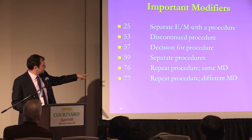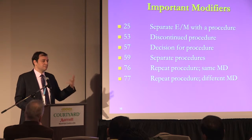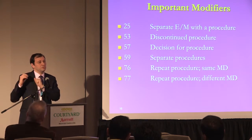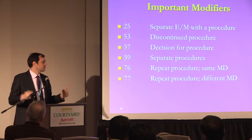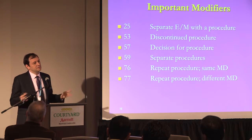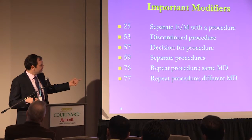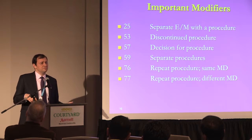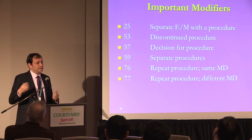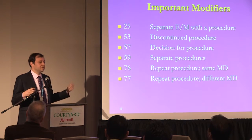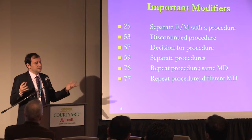Modifiers 76 and 77 apply when you repeat the same procedure. For example, if somebody had hemoptysis in the morning and you did a bronchoscopy, then did another one at 9 p.m. for another bout of significant hemoptysis, without modifier 76 the payer assumes it's the same procedure and considers it a billing error. Modifier 77 covers the same situation with a different MD in the same practice on the same tax ID.